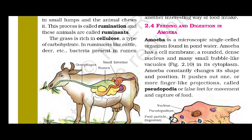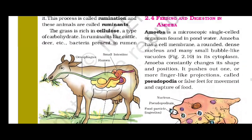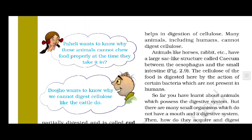This process is called rumination, and these animals are called ruminants. The grass is rich in cellulose, a type of carbohydrate. In ruminants like cattle and deer, bacteria present in the rumen help in the digestion of cellulose.